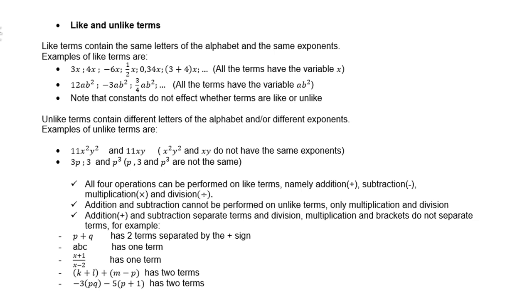For example, p + q has two terms separated by the plus sign. abc has one term because it is a times b times c. (x+1)/(x-2) has one term because the division line does not separate the terms. (k+l) + (m-p) has two terms because the brackets do not separate the terms.